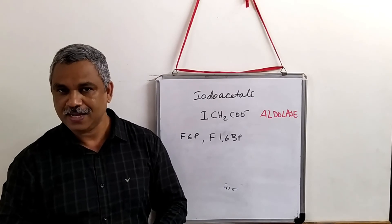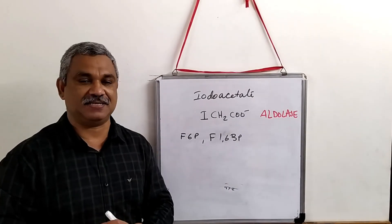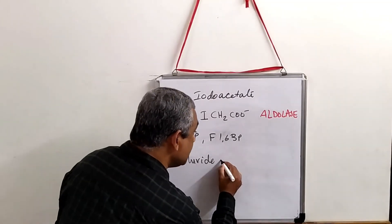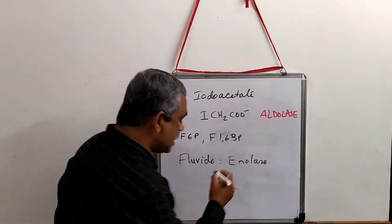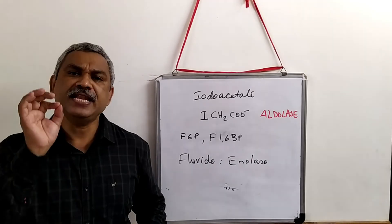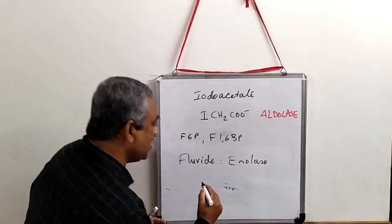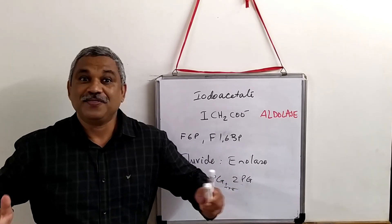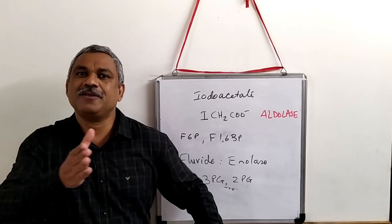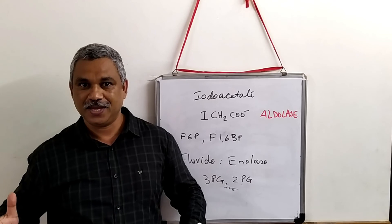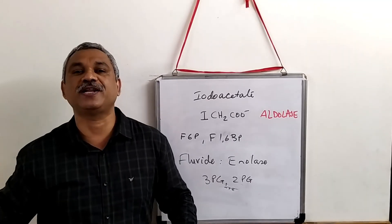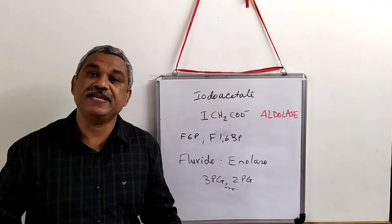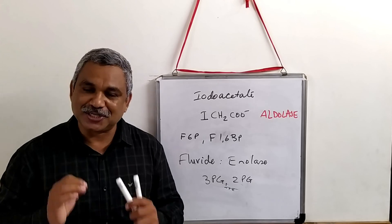Another important substance used as an inhibitor is fluoride. Fluoride will inhibit the enolase enzyme. Enolase is towards the end of the glycolytic pathway. When enolase is inhibited, what is getting accumulated? 3-phosphoglycerate and 2-phosphoglycerate. By using these two inhibitors, they were able to more or less draw a conclusion about the sequence in which the reaction is being carried out. Remember, they were trying to identify the sequence of reactions in this metabolic pathway. This gives us a clue on how various inhibitors can be used to understand a particular metabolic pathway.